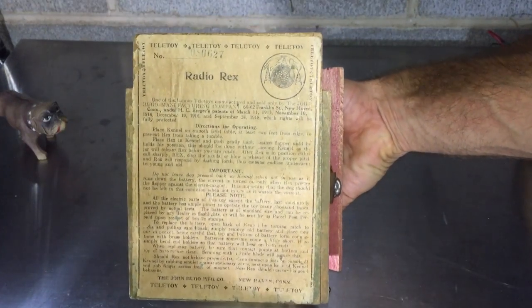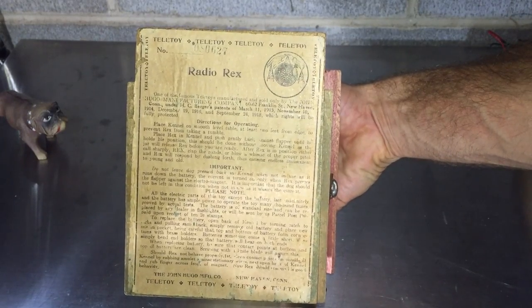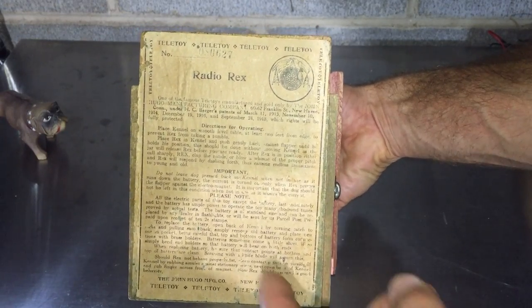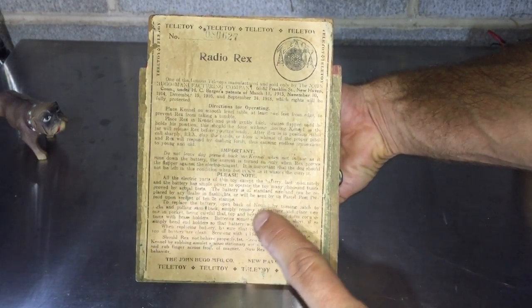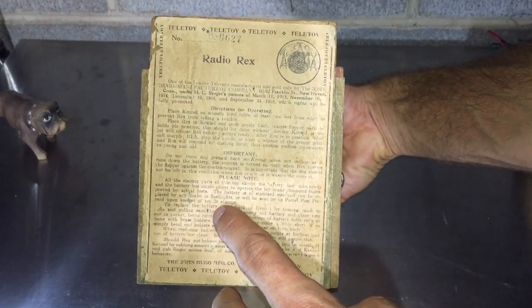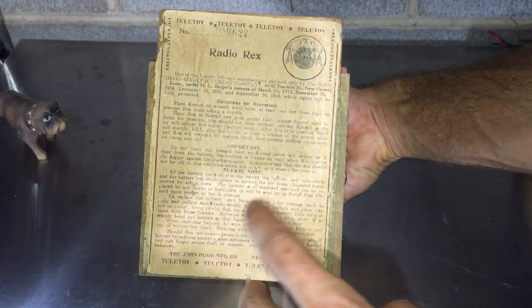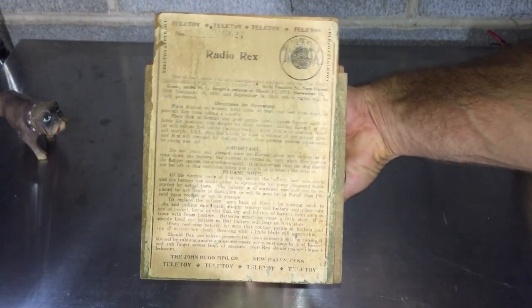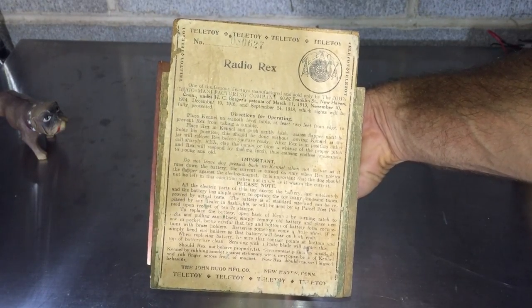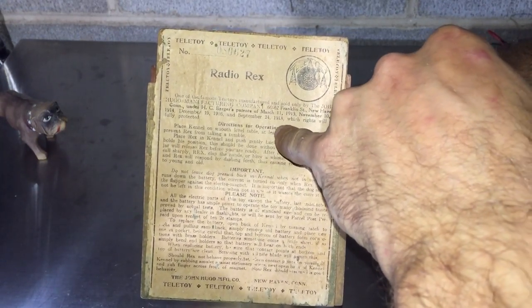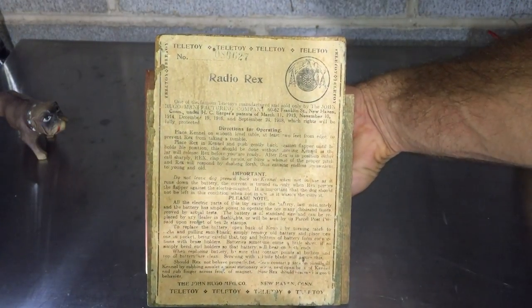Don't leave him pressed in the back. Obviously, as long as Rex is pressed in the back, the electromagnet is engaged, so it will kill your battery if you leave him engaged all the time. It talks about how to remove it. The battery is of standard size, so it's a D-cell basically, and can be replaced by any dealer in flashlights, or will be sent by us, parcel post, prepaid upon receipt of 10 two-cent stamps. So if you send them 20 cents, and I think they made this into the mid-20s, obviously this one was made after September 24th, 1918, since that is a date on it. It's got a serial number as well, it's number 80,627.